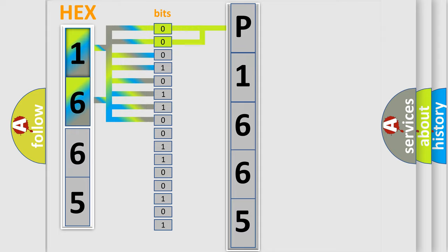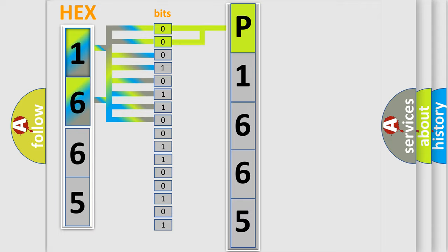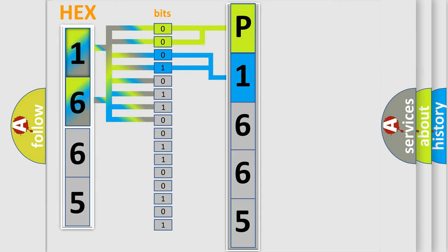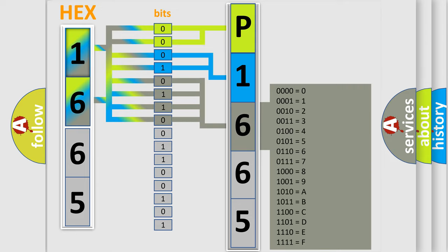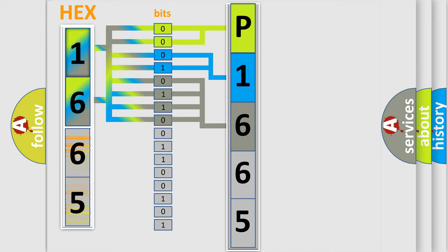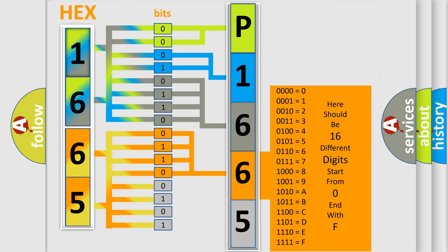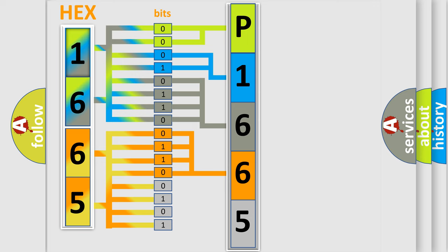By combining the first two bits, the basic character of the error code is expressed. The next two bits again determine the second character. The last bits of the first byte define the third character of the code. The second byte is composed of a combination of eight bits: the first four bits determine the fourth character, and the combination of the last four bits defines the fifth character. A single byte conceals 256 possible combinations.